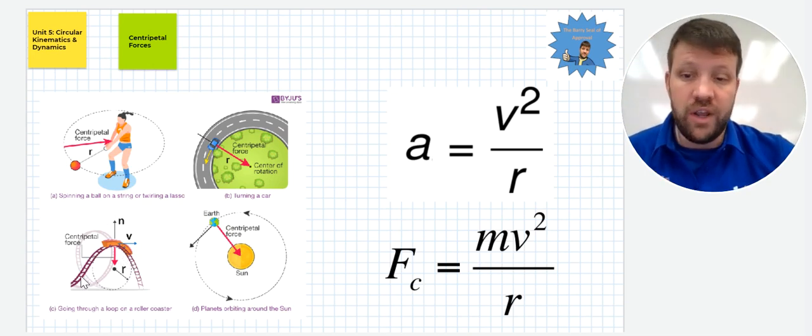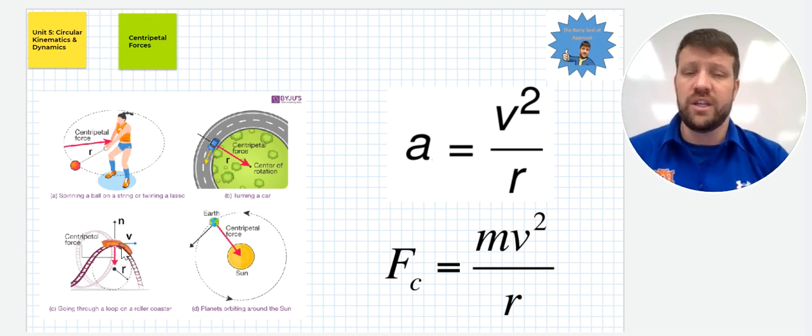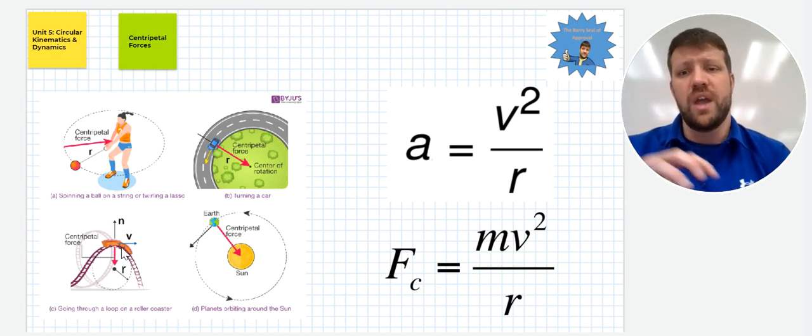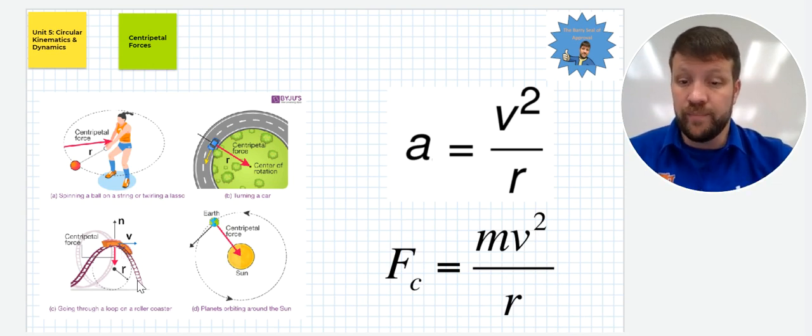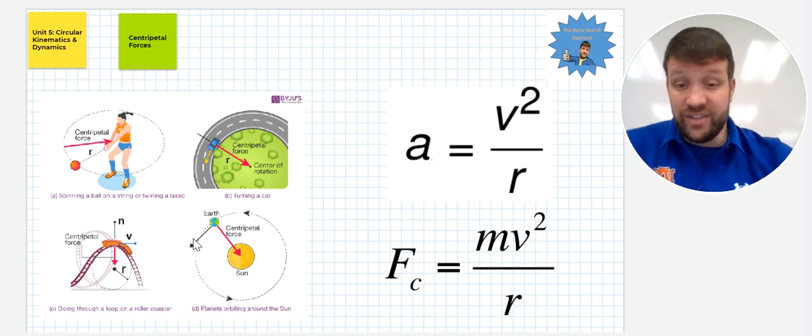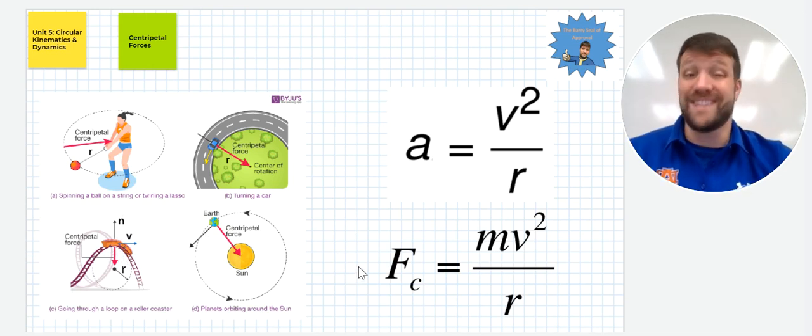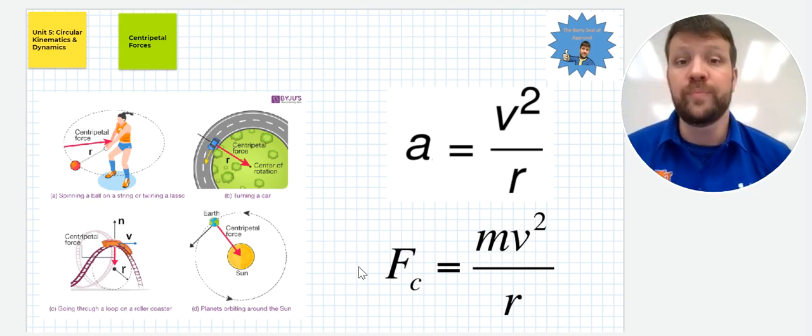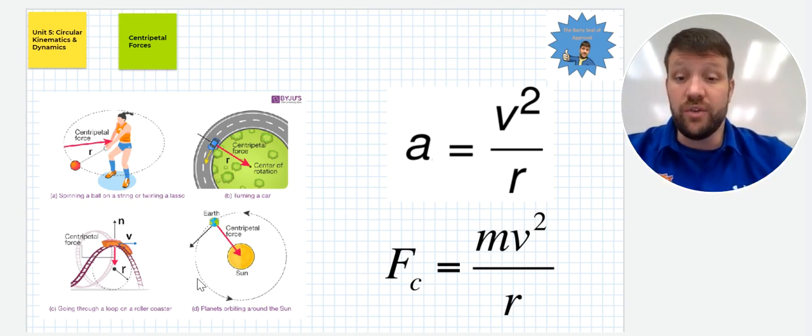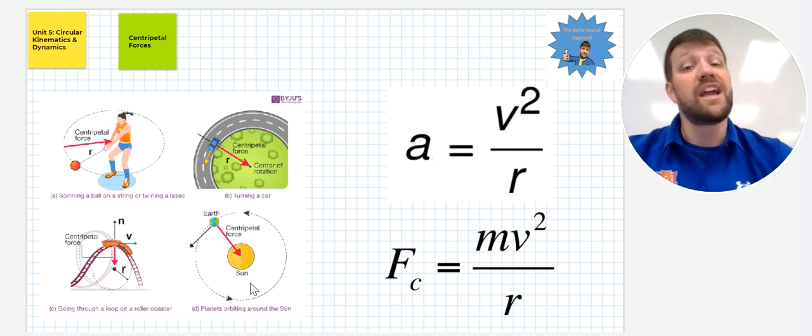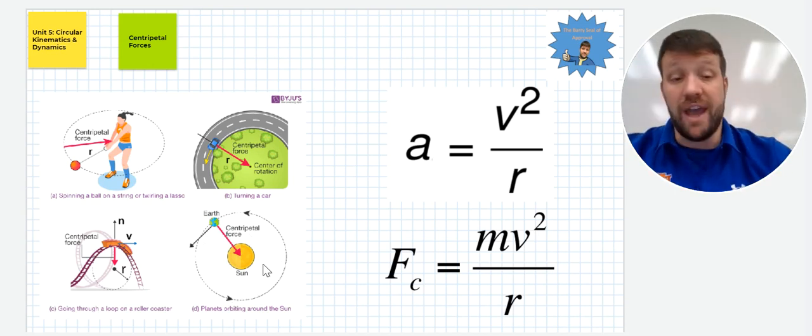Down here, we have a roller coaster. In that case, there would just be that connection, that tension type force. Whatever we would consider that force between the locked on wheels and the actual track, that would be our centripetal force in that case. And in the case here of Earth moving around the sun, it's going to be gravitation. And these are all forces you know and have calculated in the past. But in these cases here, we're going to consider those to be the centripetal force because they are what keeps something moving in a circular pattern.